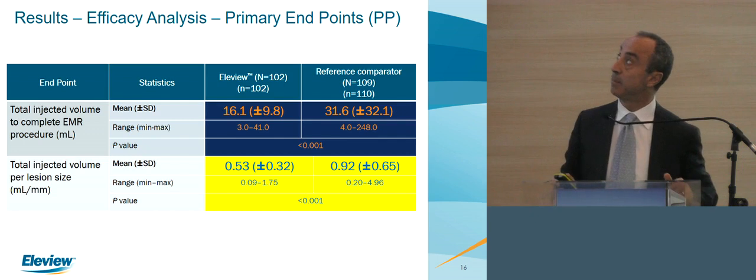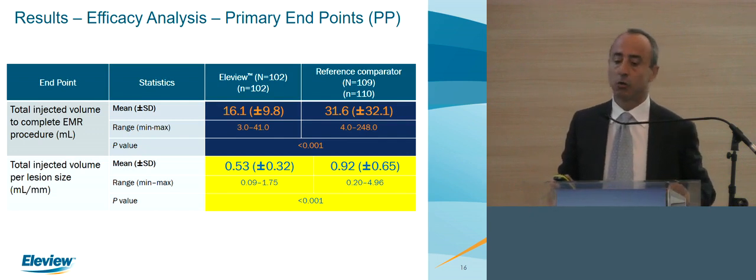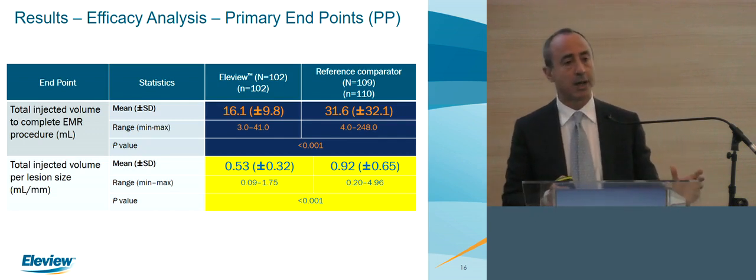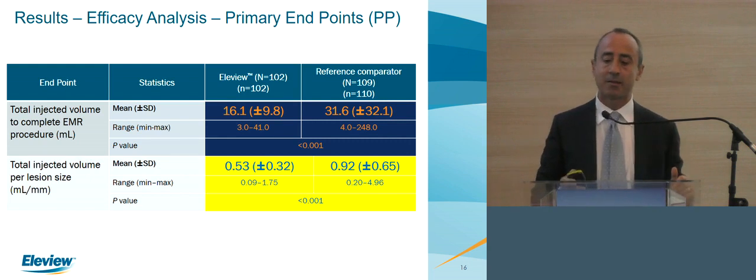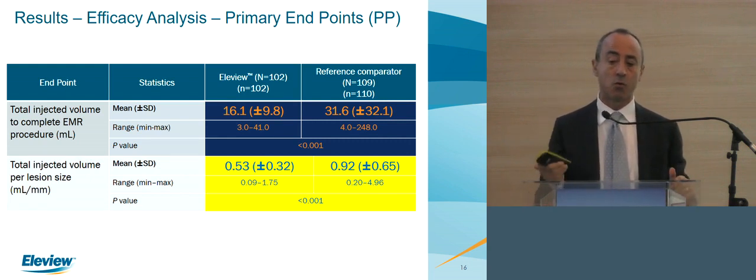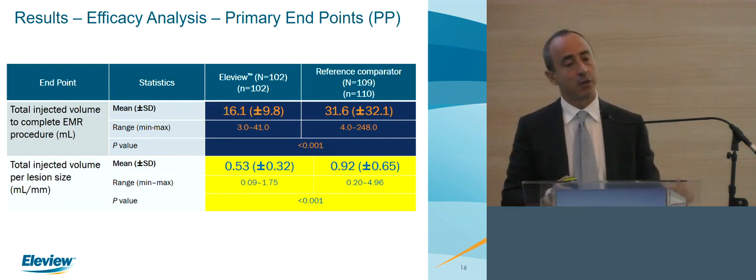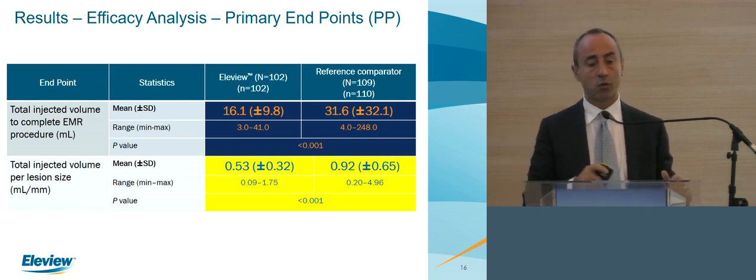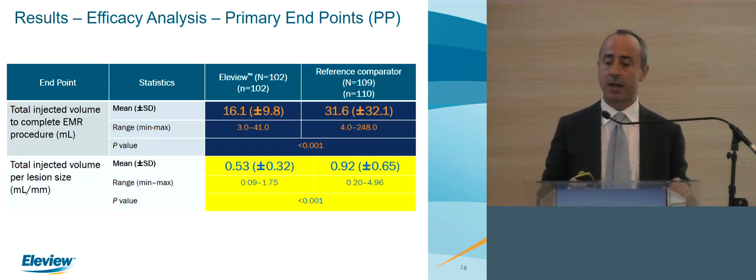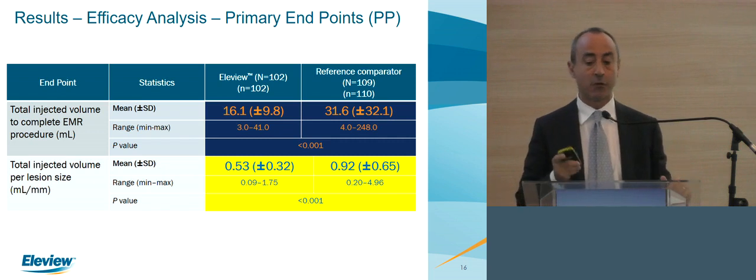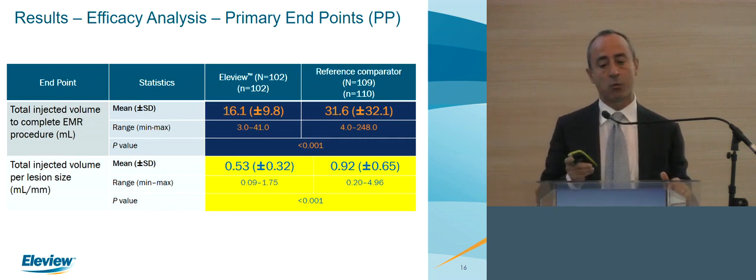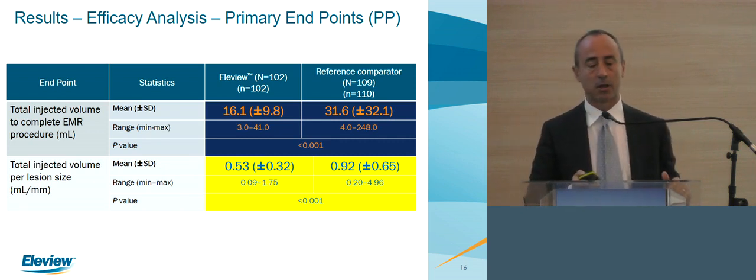These are the results. On the first row, there is a big difference in terms of total injection volume for lesions larger than two centimeters. There were 100 patients in the LA View arm and 109 in the reference comparator, saline. We used half the volume of saline. The operation time was also significantly shorter than the saline arm.